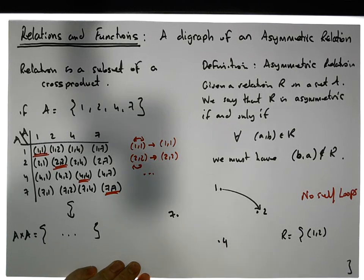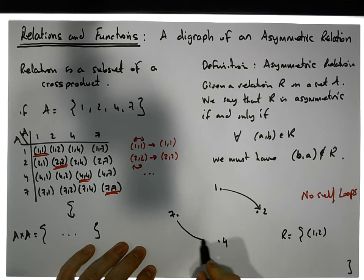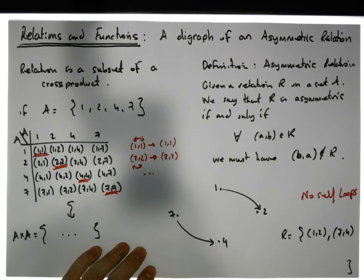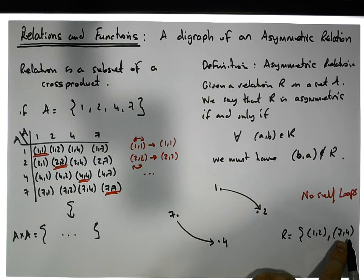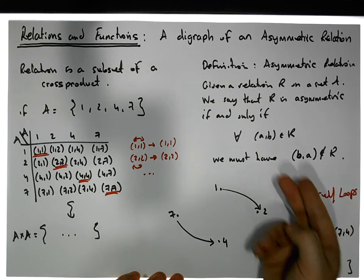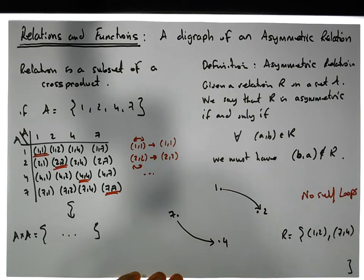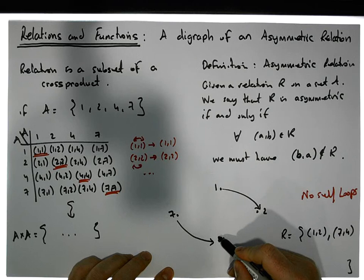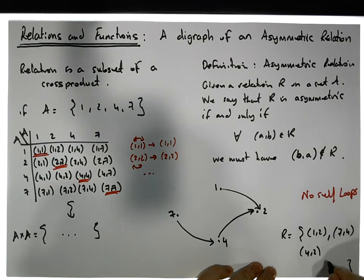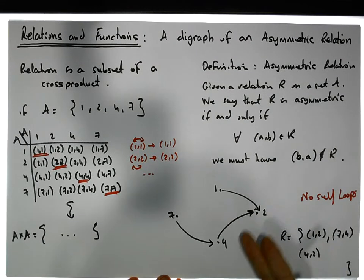Let's add another edge: 7 to 4. We already satisfy the asymmetric condition for (1,2). Now we test (7,4): flip it to get (4,7) — is (4,7) in the relation? No, it's not, so the relation remains asymmetric. Let's add another edge: 4 to 2. Flip (4,2) to get (2,4) — (2,4) is not in the relation, so it's still asymmetric.